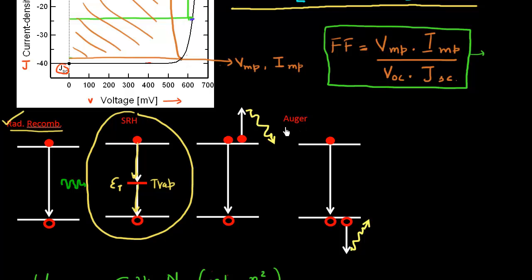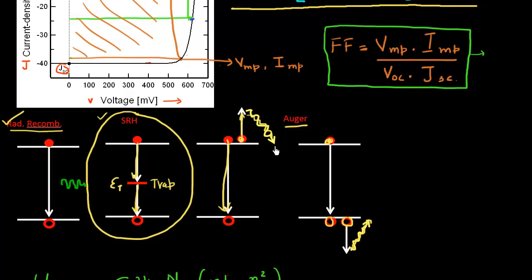There could be other recombination mechanisms such as Auger, where the electron-hole pair recombines and gives that extra energy to another electron or another hole, which subsequently thermalizes and gives that energy back to the lattice. For this video, I want to focus on the Shockley-Reed-Hall mechanism, and then maybe we can generalize it to other forms of recombination and other non-idealities as well.